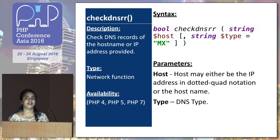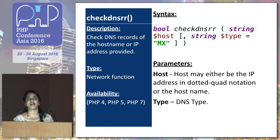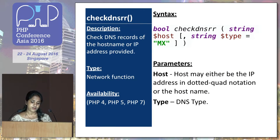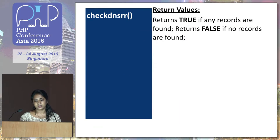The first is checkdnsrr. This function basically helps to check the DNS records of the host name or IP address provided into the function. It is a network type function, available in PHP 4, 5, and 7. It takes in two parameters: one is a host and the other is a type. Host is the IP address or the host name itself, and type is a DNS type. If you don't pass any DNS type, by default it takes MX — that's a mail exchange type. It returns true if the record exists, otherwise it returns false.